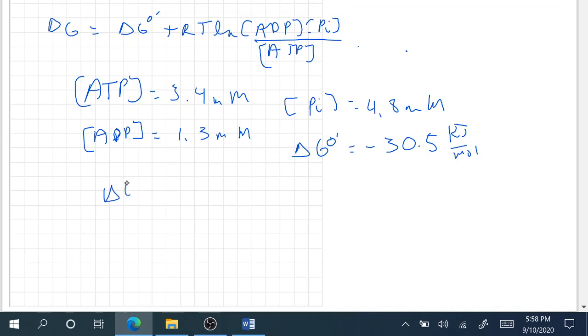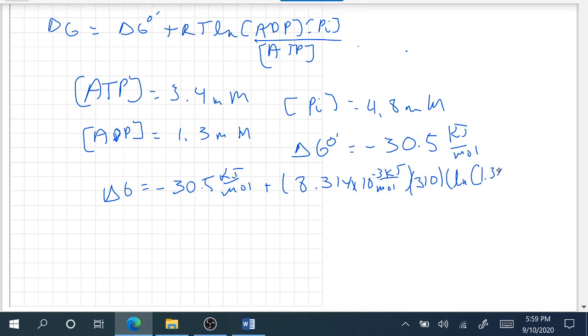So then we can calculate the Delta G at 37 is equal to negative 30.5 and we've got that in kilojoules per mole, plus 8.314 times 10 to the negative third kilojoules per mole times 273 plus 37 is 310, times the ln of 1.3 times 10 to the negative third times 4.8 times 10 to the negative third, because that's in millimolar, over 3.4 times 10 to the negative third.